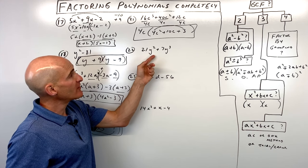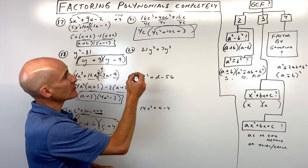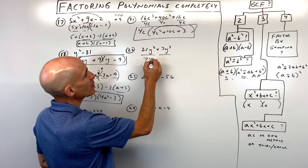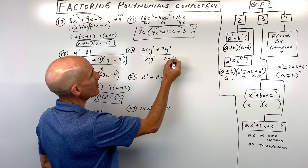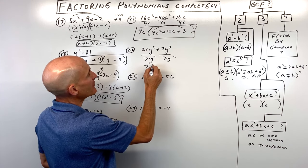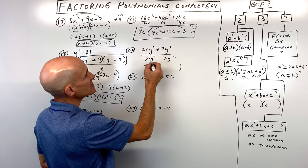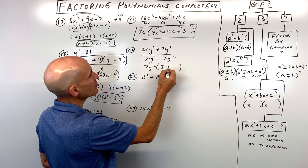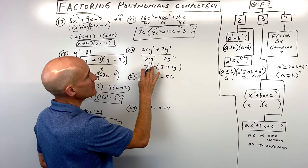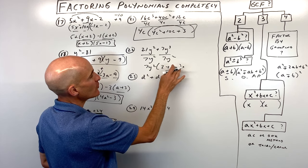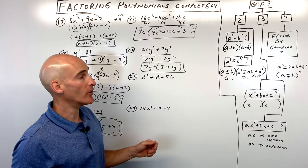Number twenty-two is a binomial with a greatest common factor of 7y squared. If we factor that out, this reduces to 3 and that reduces to y. So we get 7y squared times 3 plus y. If you distribute 7y squared back in, you get back to the original polynomial.